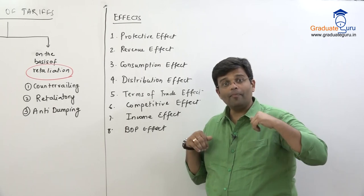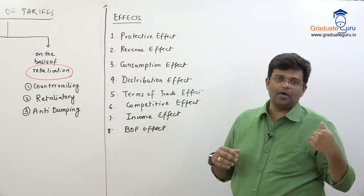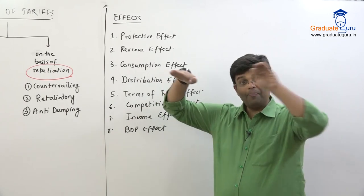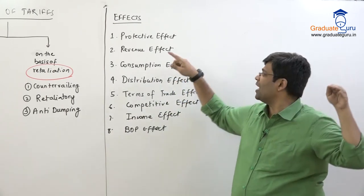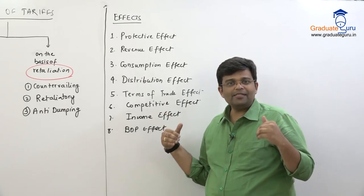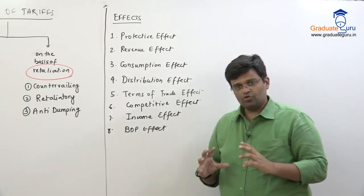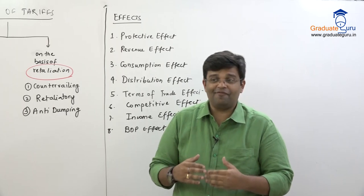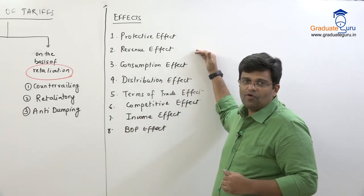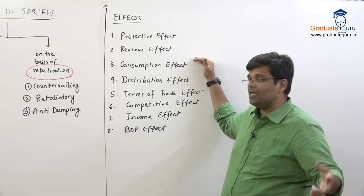Now let us study the effects of tariffs. The first is the protective effect: tariffs protect the domestic industry by making imports as costly as domestic goods — if imports are cheaper they kill domestic industry, so tariffs are imposed to make imports costlier. The second is the revenue effect: it increases government revenue. If demand is inelastic, even after prices rise due to tariffs, people still buy, so the government earns more revenue.